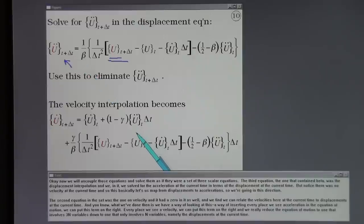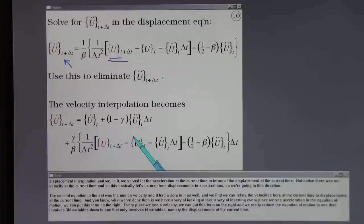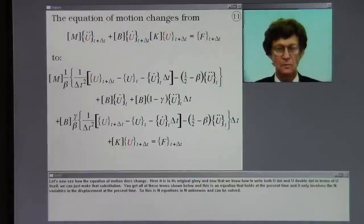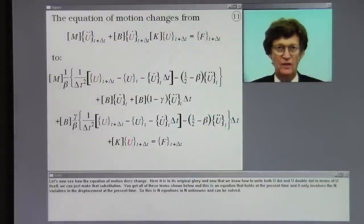The second equation in the set was the one on velocity. And it had a zero in it as well. And we find we can relate the velocities here at the current time to displacements at the current time. And what we've done then is we have a way of inserting every place we see acceleration in the equation of motion, we can put this term on the right. Every place we see a velocity, we can put this term on the right. And we've really reduced the equation of motion to one that involves three n variables down to one that only involves n variables, namely the displacements at the current time.